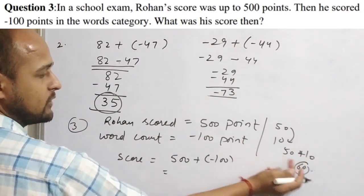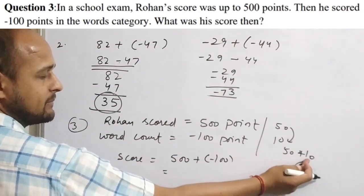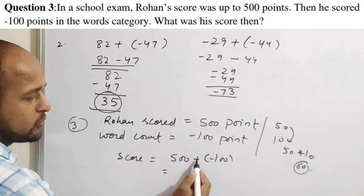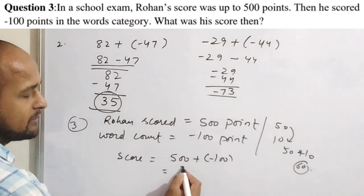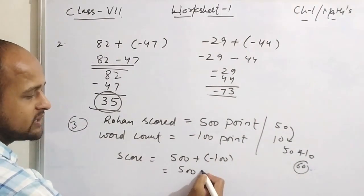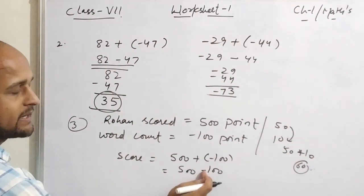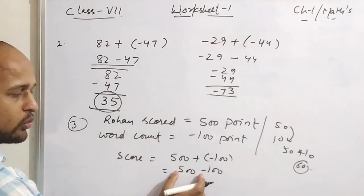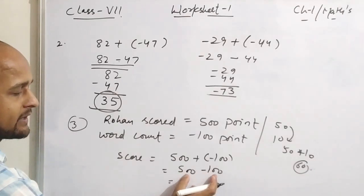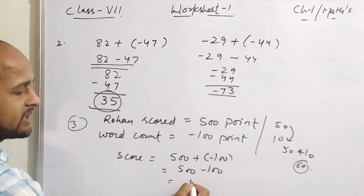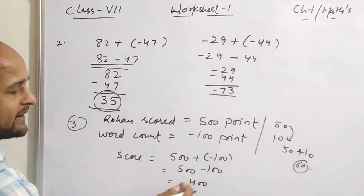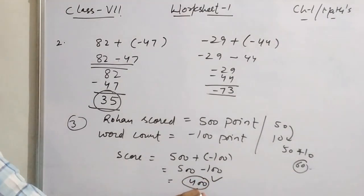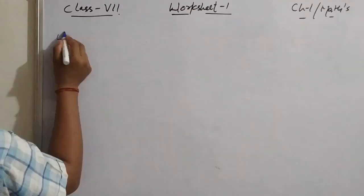We take 500 and the opposite sign means subtract. So 500 minus 100 equals 400. Since 500 is positive, Rohan's final score is 400 points.